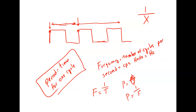If frequency goes up, then the time for each cycle has to go down. So what our scope does is measure time, but we're concerned with frequency — revolutions per minute, not how fast the revolutions are going. So what we need to do right off the bat is go from time to frequency.